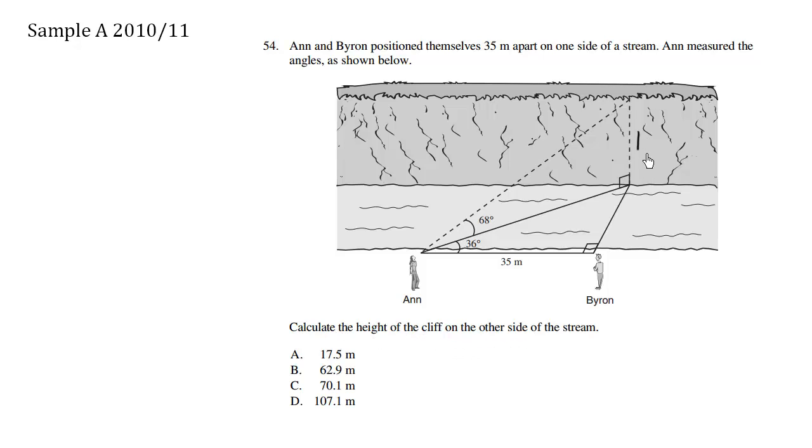Calculate the height of the cliff on the other side of the stream. So we're trying to solve for H, the height of this triangle here. But we only have one angle, we don't have any of the sides. We don't have enough information.